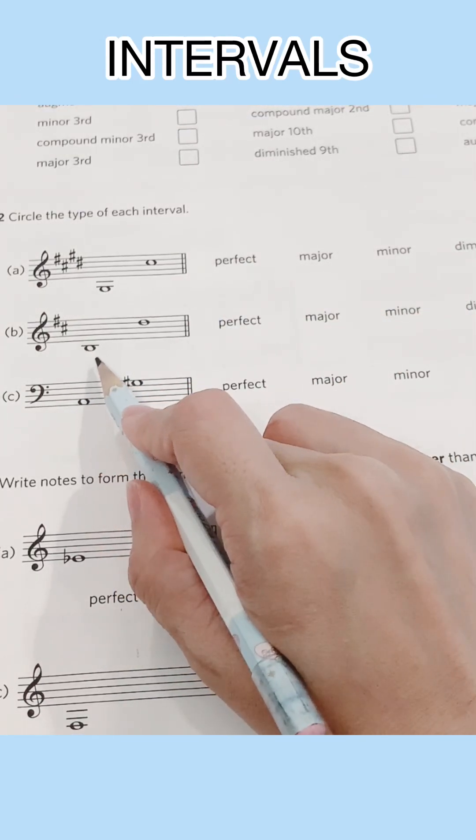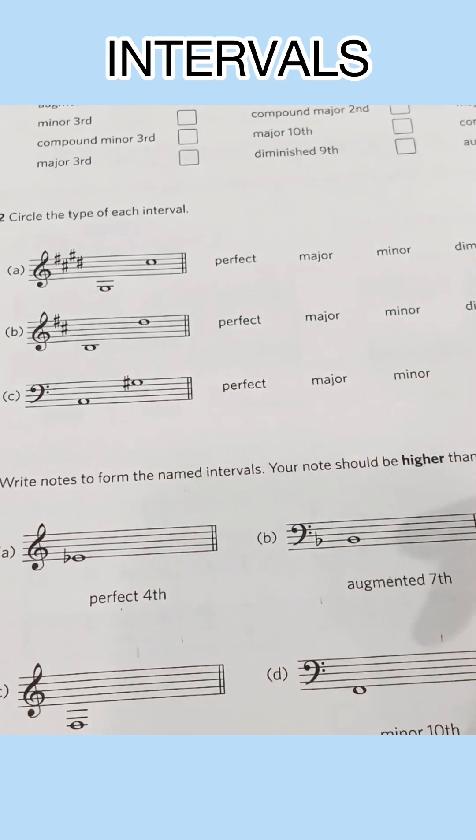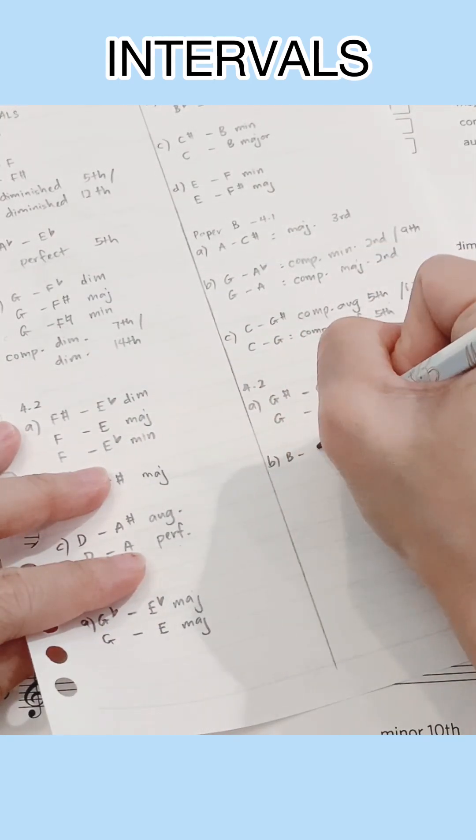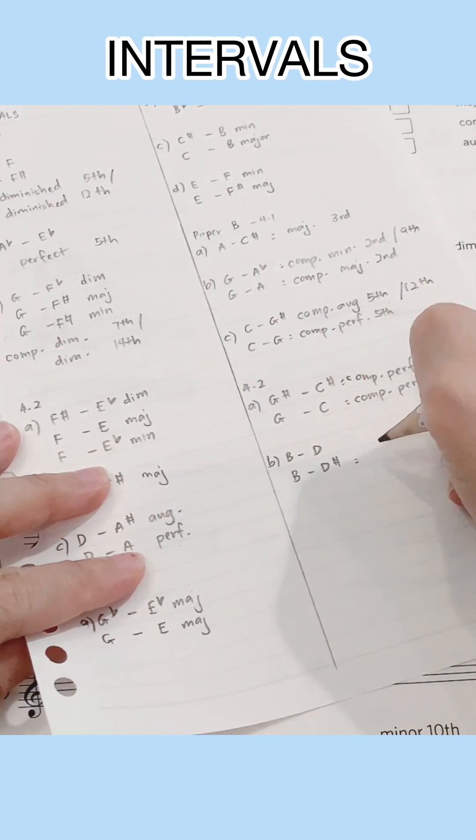The next question is a compound interval but we still solve it with the same method nevertheless. In B major, D has a sharp. So B to D sharp is a major third.